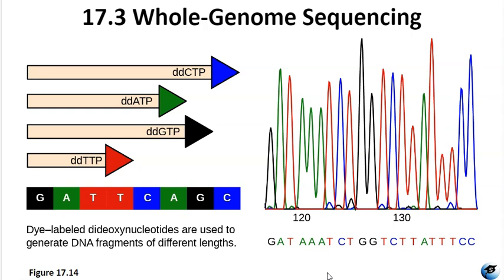The chain termination method — also known as dideoxy Sanger sequencing — was developed in the 1970s. It involves DNA replication of a single-stranded template using a primer, regular deoxynucleotides, and a small portion of fluorescently labeled dideoxynucleotides. The dideoxynucleotides lack the hydroxyl group at the site where another nucleotide typically attaches, causing termination of DNA replication whenever they are incorporated into the growing strand. This produces multiple short replicated DNA strands each terminating at different points. Gel electrophoresis is then used to separate the strands, creating a ladder-like pattern, and by associating each band's color with the specific dideoxynucleotide used, scientists can identify the DNA sequence.